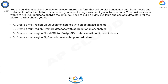A. Create a multi-region Cloud Spanner instance with an optimized schema. B. Create a multi-region Firestore database with aggregation query enabled. C. Create a multi-region Cloud SQL for PostgreSQL database with optimized indexes. D. Create a multi-region BigQuery dataset with optimized tables.